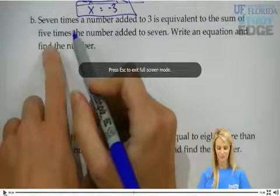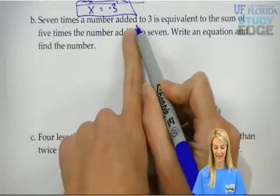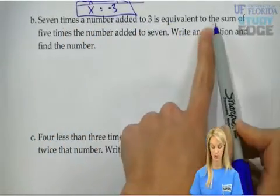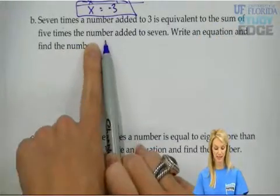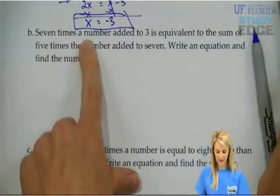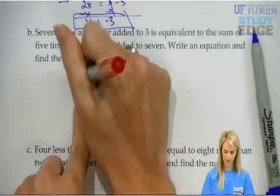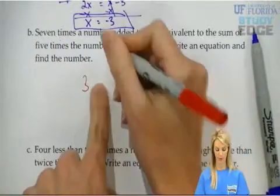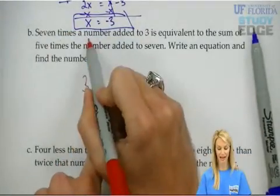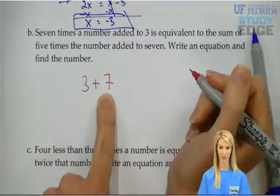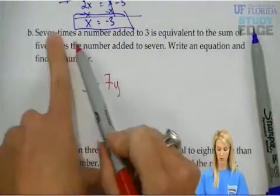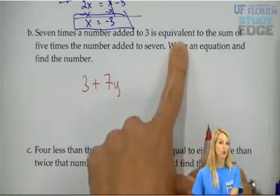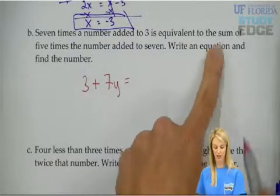Letter B. Seven times a number is added to 3. Okay? So, seven times a number added to 3 is equivalent to what? It's equivalent to the sum of five times the number added to 7. So let's see what we've got. Seven times a number is added to 3. So, we have 3 and we're adding seven times a number. Right? We have 3. Seven times a number is then added to 3. What's being added to 3? Seven times a number. Well, what's that number? We don't know. Let's call it y. If we did x time, let's do y this time. So, seven times a number is being added to. A plus 7y is being added to 3. This is equivalent to. Equivalent to means what? It means it's equal to.